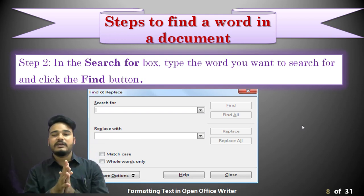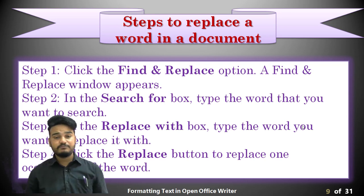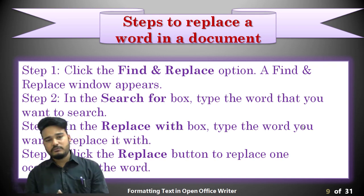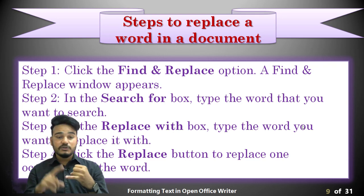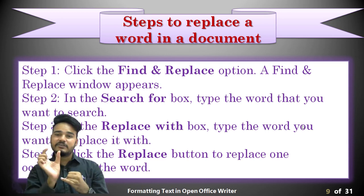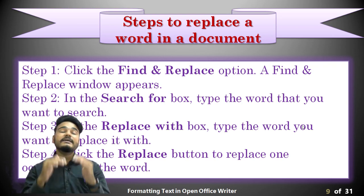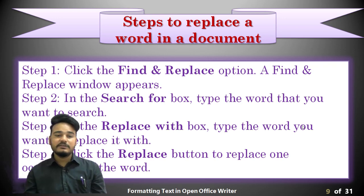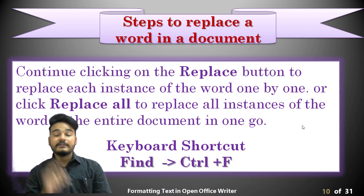After doing that, click Close and your result will be there in your OpenOffice Writer file. The steps are: first, click on the find and replace option — a find and replace window will appear. In the first search box, type the word you want to search. In the replace box, type the word you want to replace with. Click Replace to replace one occurrence, or Replace All to replace all, then click Close.